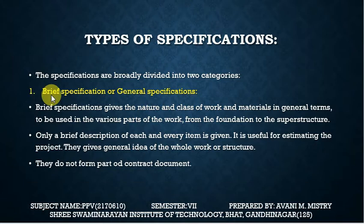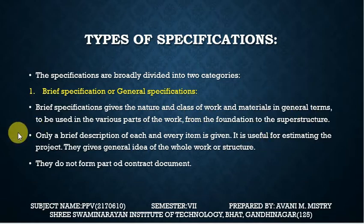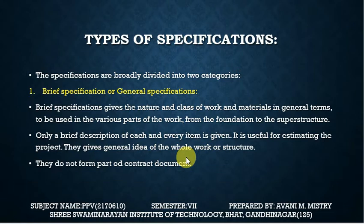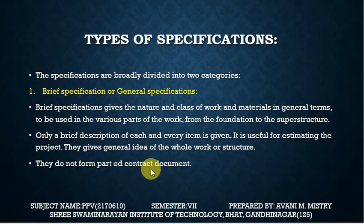In brief specification, whatever item we have, there is a small description. The brief specification gives the nature and class of work and general terms to be used in the various parts of the work from foundation to superstructure. Only a brief specification of each and every item is given. It is useful for estimating the project and gives the general idea of the whole work or structure — it is a short specification giving an idea.